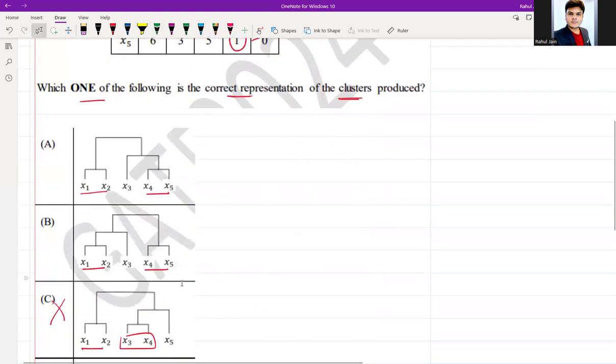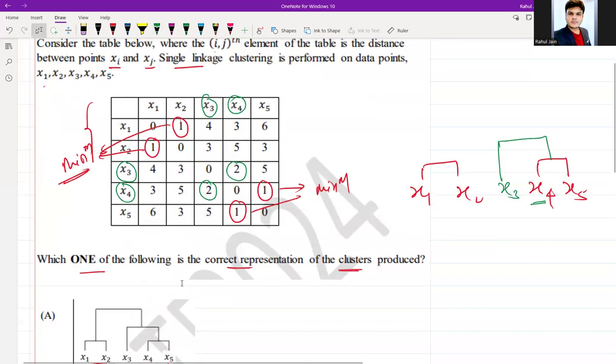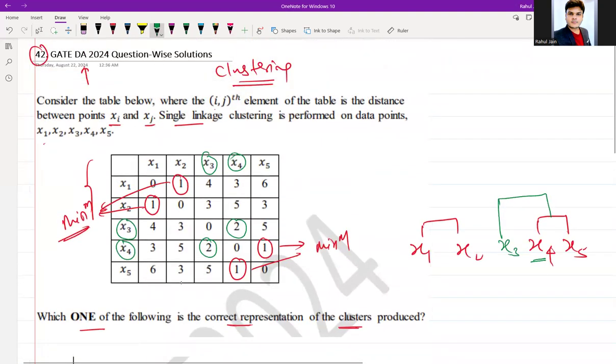If you see here, B itself got cancelled because here we are merging x3 with the result of x1, x2, which is not possible. Obviously x3 will be merged with the result of x4 and x5 because as per the table you can see x4 is part of combination with x3.